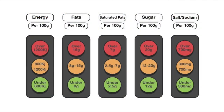Energy, fat, saturated fat, sugar and salt each have their own traffic light, which tells you if the level of those ingredients in the product makes your food green, amber or red.